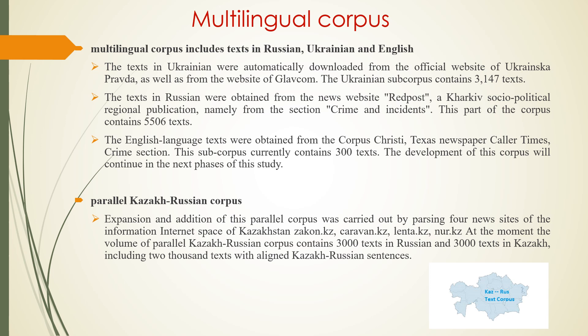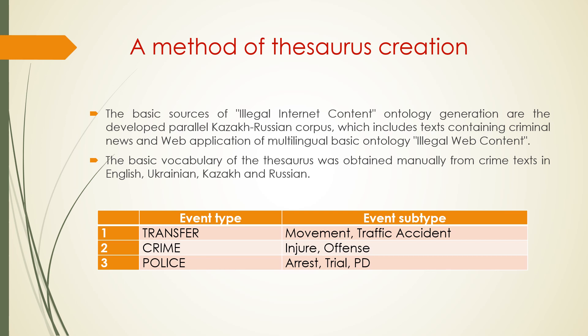Expansion of this parallel corpus was carried out by parsing four new sites from the Kazakhstani internet space: Zakon.kz, Karavan.kz, Lenta.kz, and Nur.kz. At the moment, the parallel Kazakh-Russian corpus contains 3,000 texts in Russian and 3,000 texts in Kazakh, including 2,000 texts with aligned Kazakh-Russian sentences. The basic sources for illegal internet content ontology generation are this parallel Kazakh-Russian corpus and a web application of multilingual basic ontology of illegal web content.